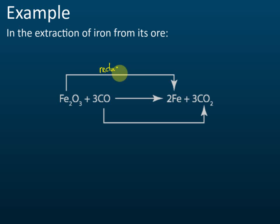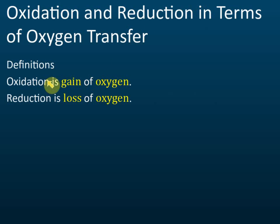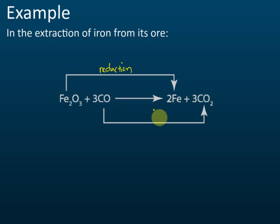So iron oxide undergoes reduction. Now for carbon monoxide — it becomes carbon dioxide, so it gains oxygens: one oxygen before the reaction, two after. Gaining oxygen means it undergoes oxidation. That's how straightforward it is — just check whether the substance gains or loses oxygen to determine if it undergoes reduction or oxidation. But remember, this only applies to certain reactions.